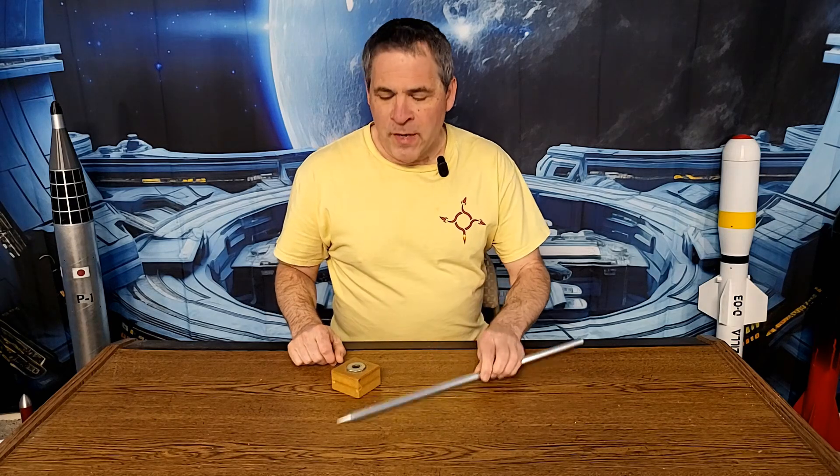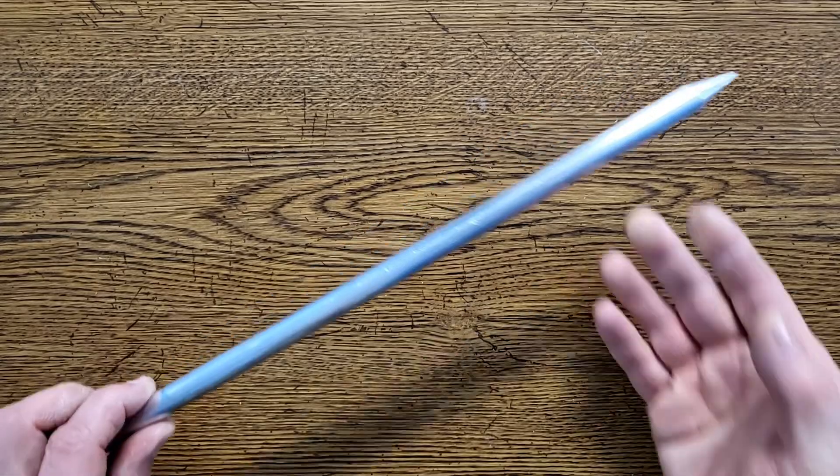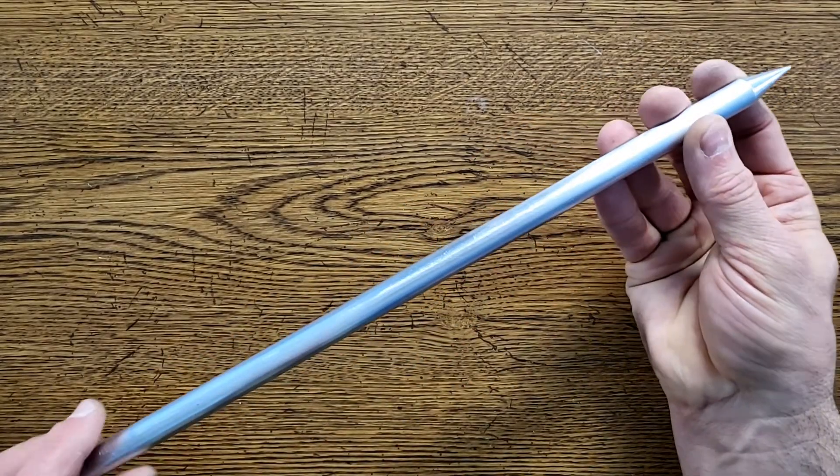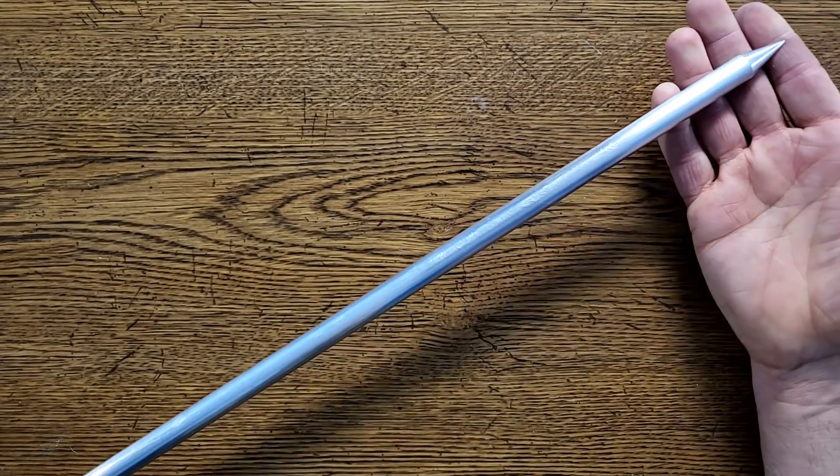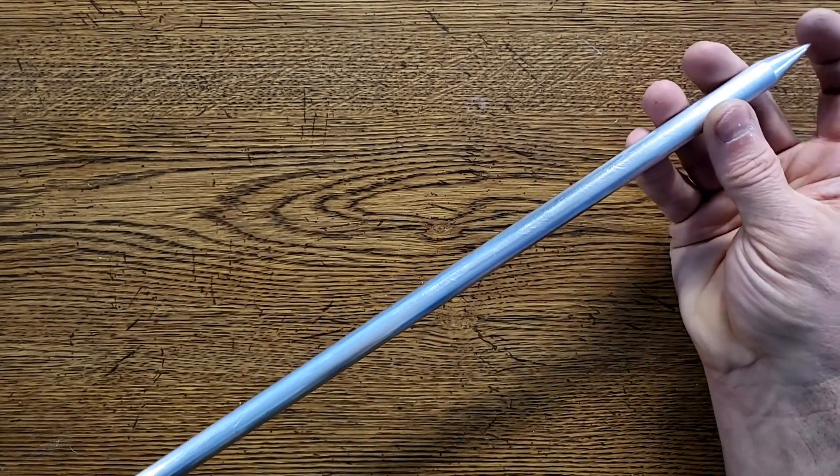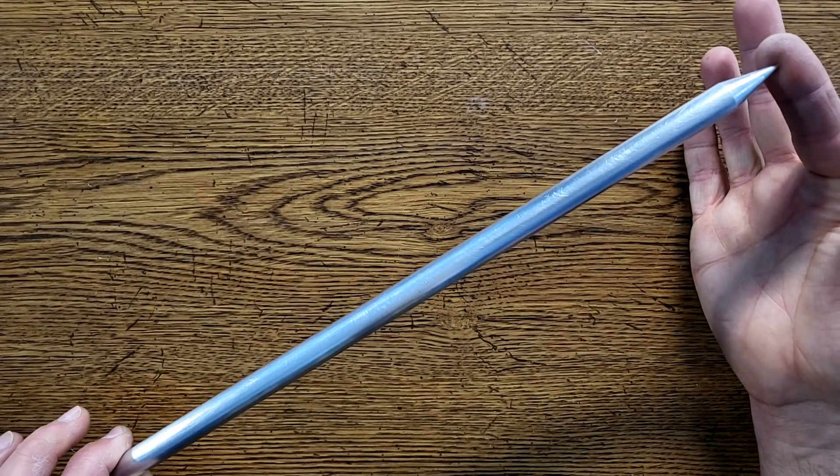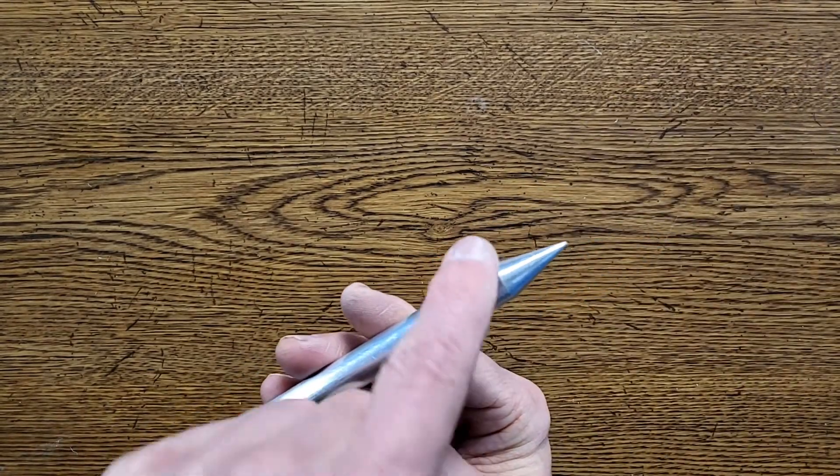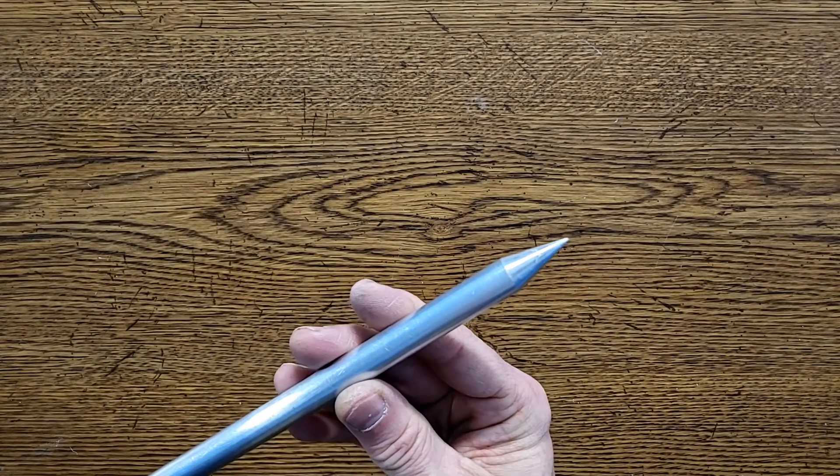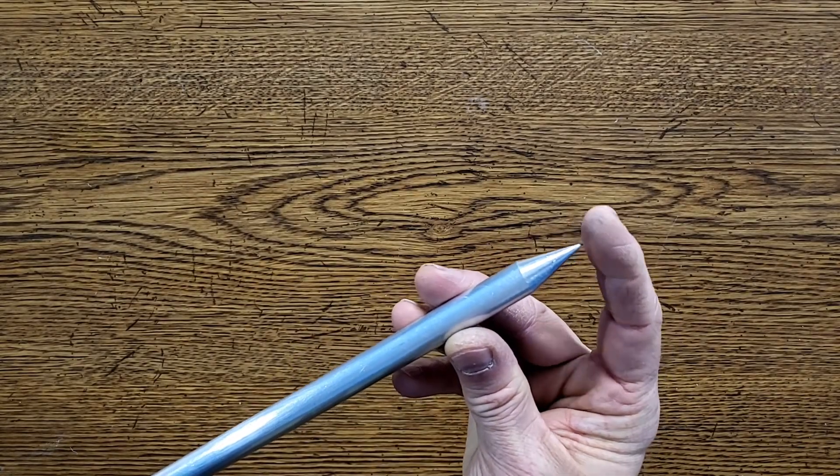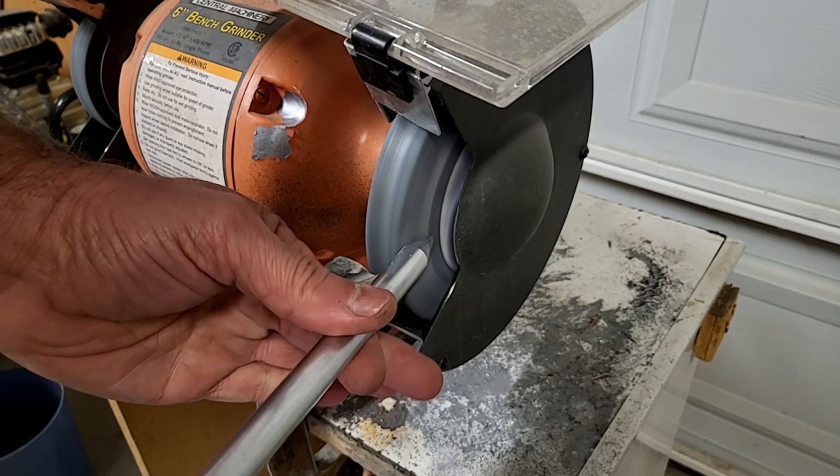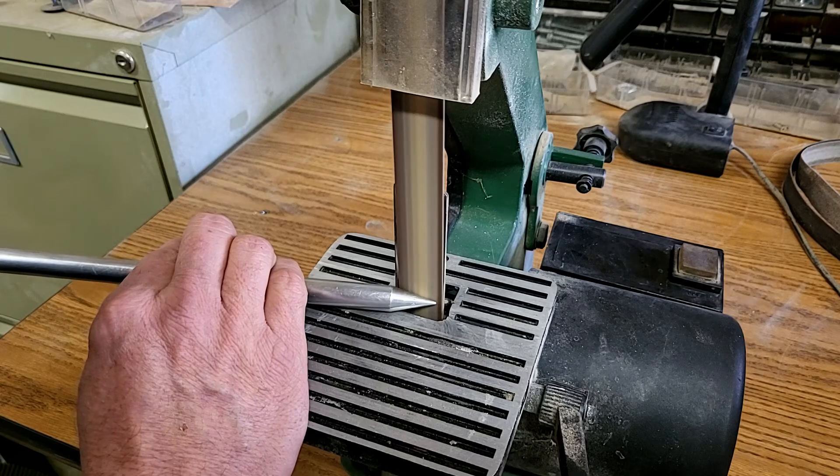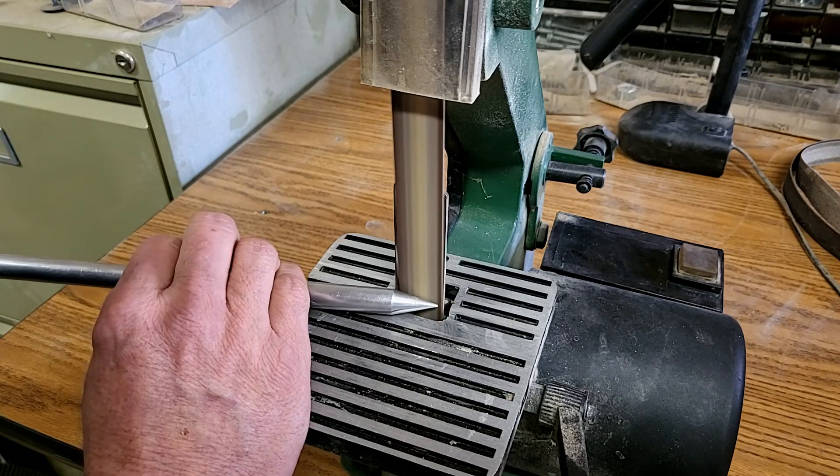Before we make the motor, we need to make the coring rod and the core rod alignment tool. The coring rod is a half inch diameter metal rod at least 12 inches long. It can be steel or aluminum, as long as it has a really smooth surface. We need to make a pencil style tip at one end. This will help it seat properly into the nozzle hole when coring the fuel. A grinding wheel can be used to easily remove most of the material to form the tip. And then use a belt sander to finish the tip.